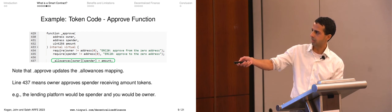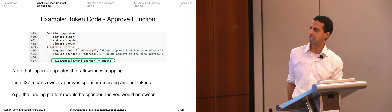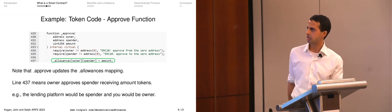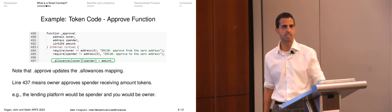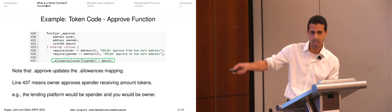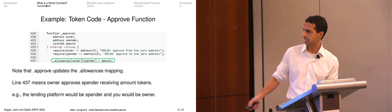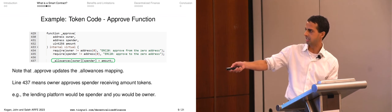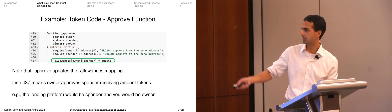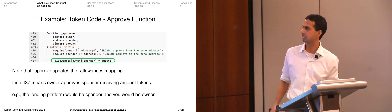That approval is then directly reflected in the allowance attribute. You go to the tether contract and say you're okay with Aave taking five of your tokens, and the tether contract stores it in the allowance attribute. Line 437 is exactly where it happens — it says the owner (you) approves the spender (Aave) for a specified amount, and it directly stores that there.